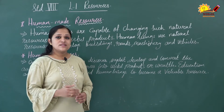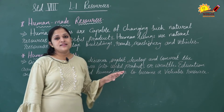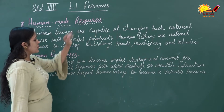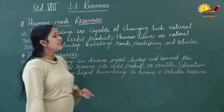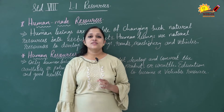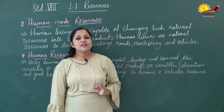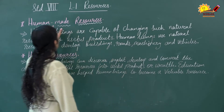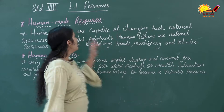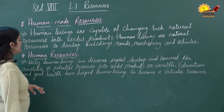Humans use raw materials to make buildings, roads, machinery, and vehicles. These raw materials are available in nature, and all these finished products are called human made resources. Human beings, with the help of their skills and knowledge, use raw materials to give us finished products. Even technology is an example of human made resources — technology itself is also made by human beings.